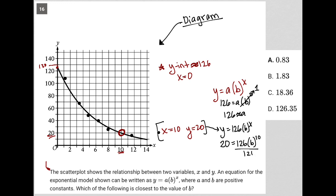I could divide both sides by 126. I go to my calculator and I see that 20 divided by 126 is equal to 0.158.